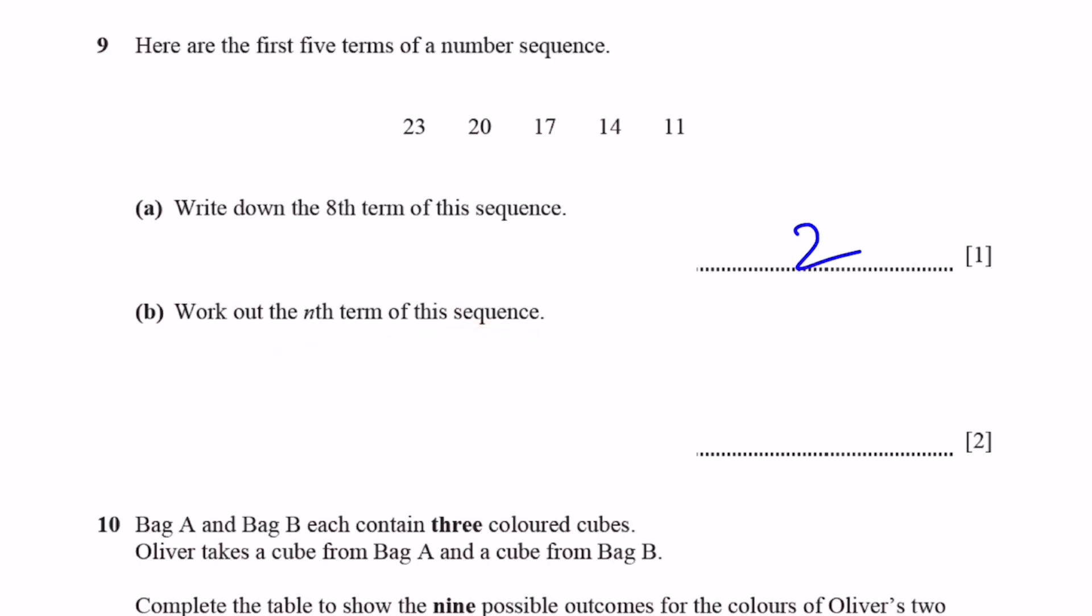Part b. Work out the nth term of the sequence. There's a formula we can use to find the nth term. Because this is a linear sequence, we add or subtract the same amount, which is minus 3. We can do a plus d into n minus 1, where a is the first term and d is the common difference. That'll be 23 plus minus 3 into n minus 1. So that'll be 23 minus 3n plus 3. So that'll be 26 minus 3n.